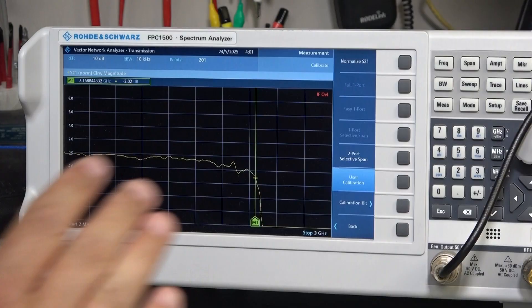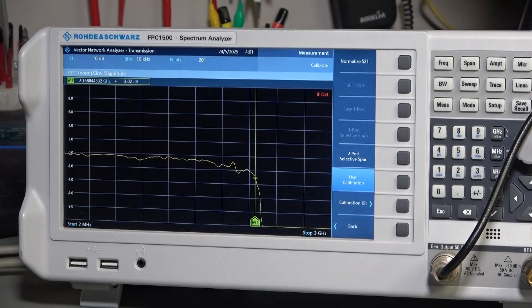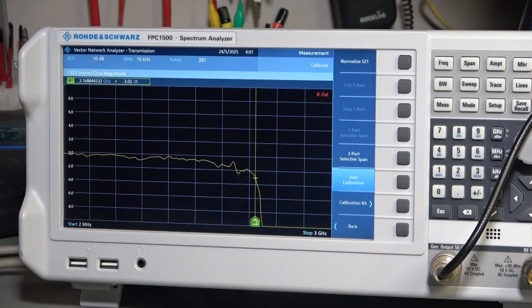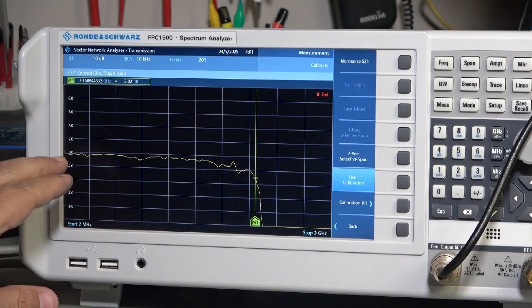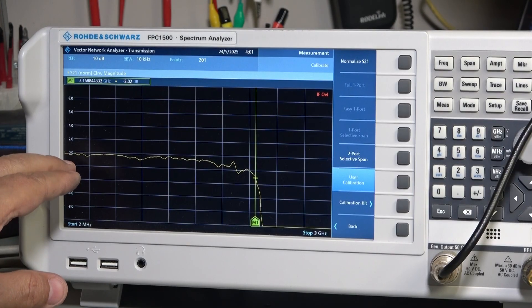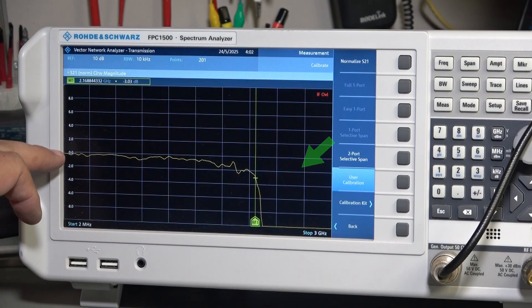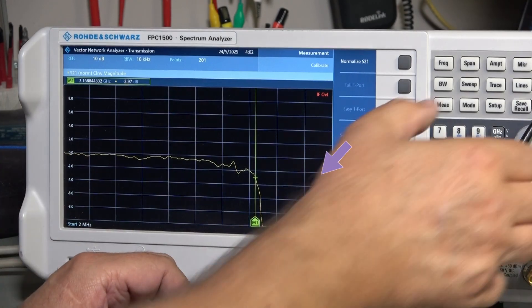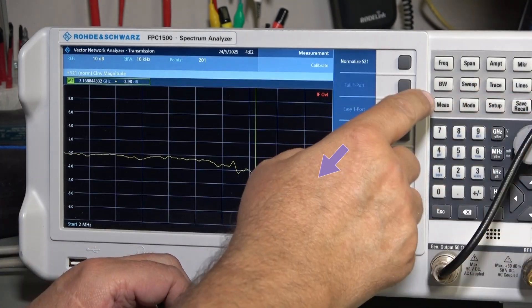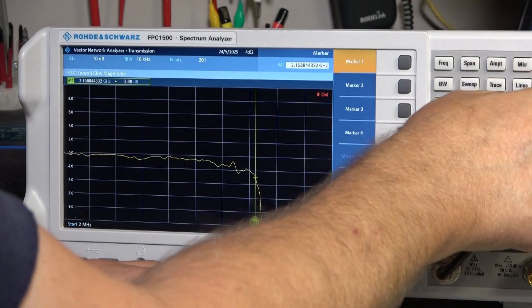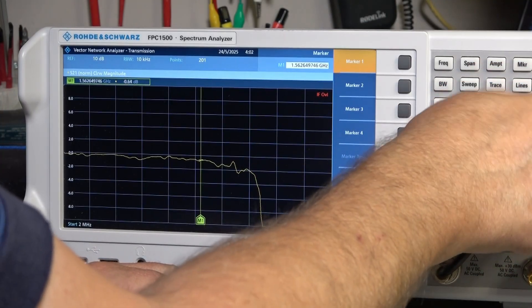A little 2 dB mess around 1.8 gigahertz, and then minus 3 dB at 2.16 to 2.17 gigahertz is where we've got that marker. Just running the marker backwards and forwards to take a look, but yeah, pretty good.